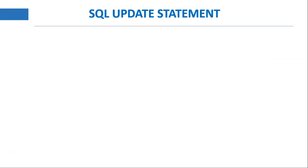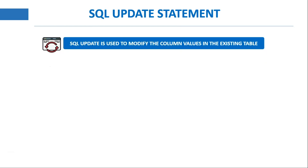So what is the SQL update statement? The SQL update statement is used to update the column values in an existing table. That means it is used to change the values present in one or more rows in an existing table. The WHERE clause is used in the update statement to update only the matched rows that satisfy the condition specified in the WHERE clause.